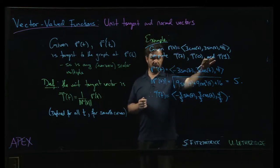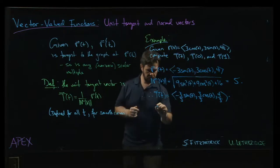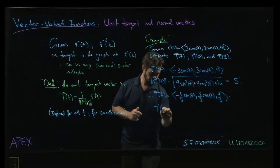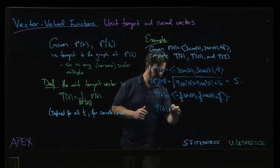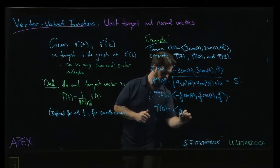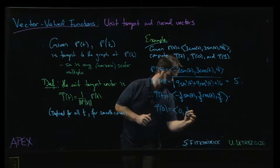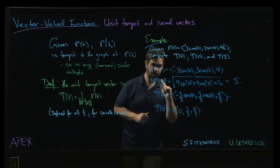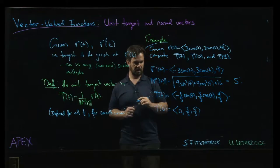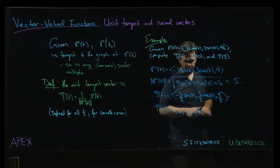And now if we want the value at a couple of different points, well t of 0 will be 0, 3 fifths, 4 fifths and yes you can confirm that that is indeed a unit tangent.